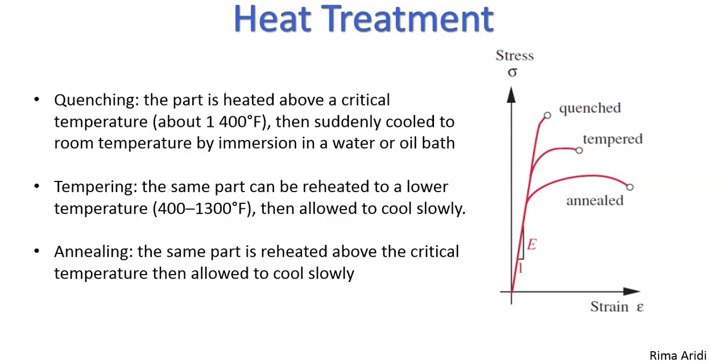Now here are three types of heat treatments. Each one is used for specific purposes. For example, quenching is heating the material above a critical temperature then suddenly cooled to room temperature by immersing it in water or oil bath.